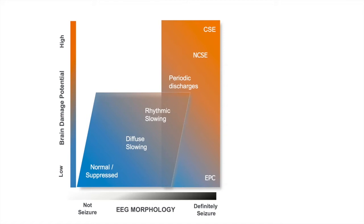The Clarity algorithm — artificial intelligence in its most commercially available form — is designed to identify anything to the top right of that curved line. It's going to be identifying many patterns of periodic discharges as well as non-convulsive status cases and will alert the user to take a second look.